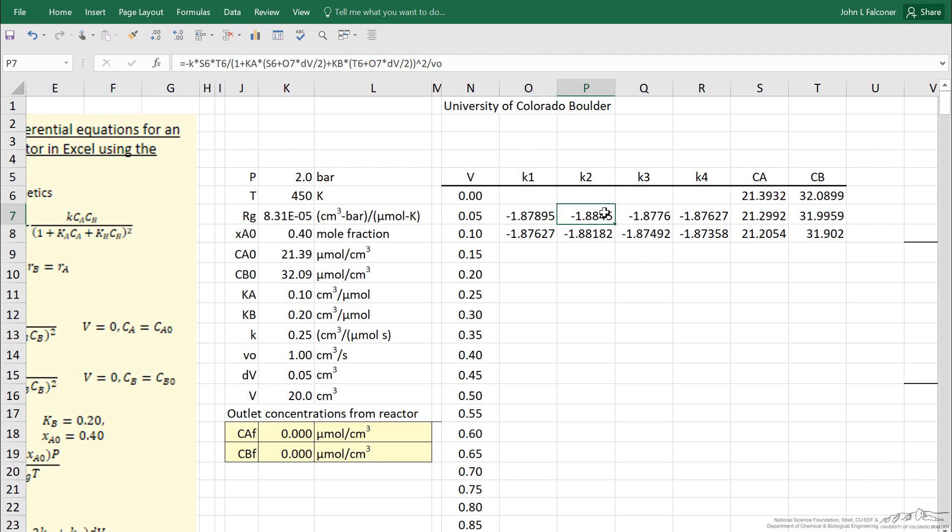And T6, the concentration of B at the inlet. Well then I've entered likewise for K2 the formula that's in the yellow area on the left, and K3 and K4.